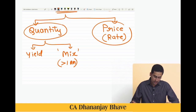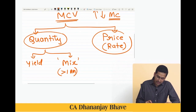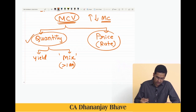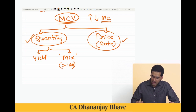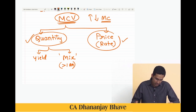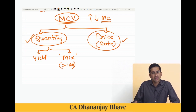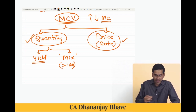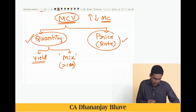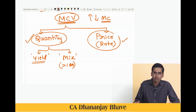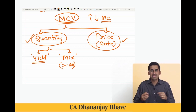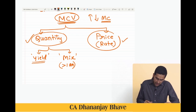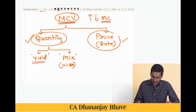To quickly repeat: material cost variance can be because I consume more quantity than necessary, or I pay more price than initially expected. Additional quantity consumption can be because the raw material was of bad quality — called yield variance — or because good quality raw materials were mixed in an incorrect ratio, causing a mix variance.